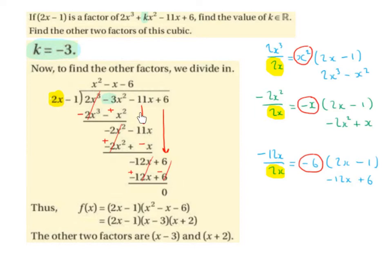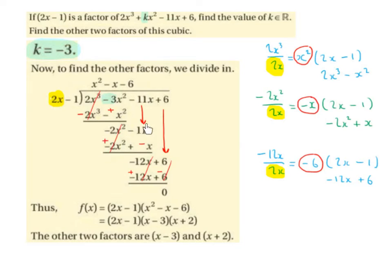We bring down the minus 11x and repeat the process. We take minus 2x squared divided by 2x, which gives minus x. So we write minus x on top of the bus stop and multiply it by 2x minus 1: minus x by 2x is minus 2x squared, and minus x by minus 1 is plus x. We write that underneath, change the signs, the x squared terms cancel, and minus 11x minus x gives minus 12x.